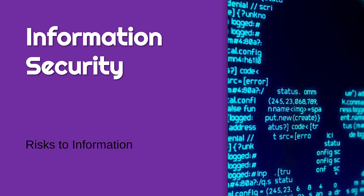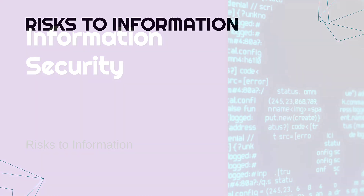Hello, we're now going to go through five different risks to information. The five are kind of categories of these risks. Within them, there are specific particular risks, some of which we're going to go into in future videos, some of which we have maybe talked about already to an extent.